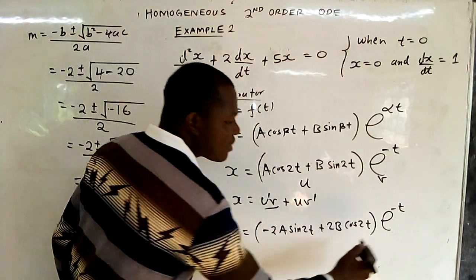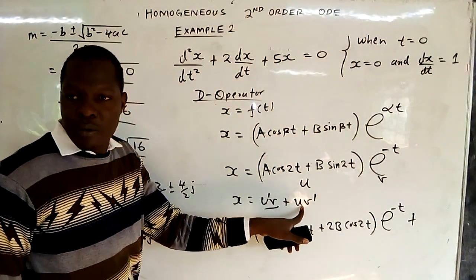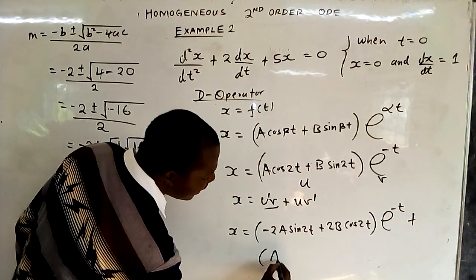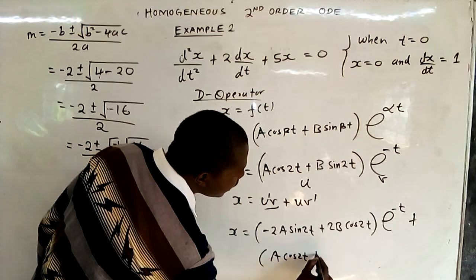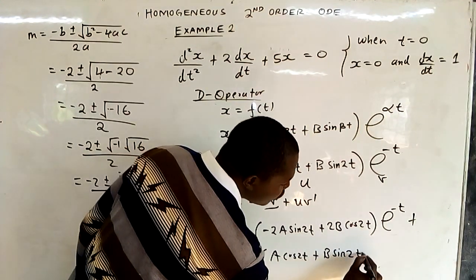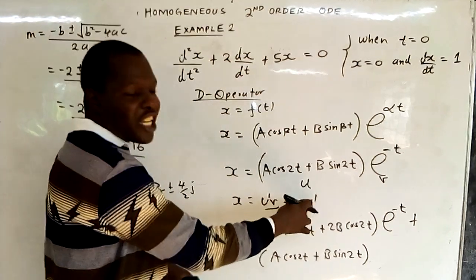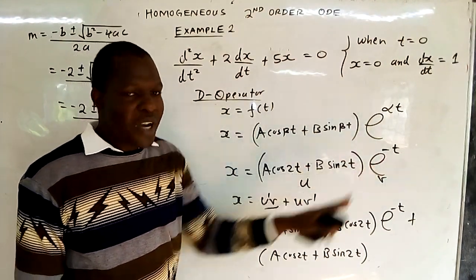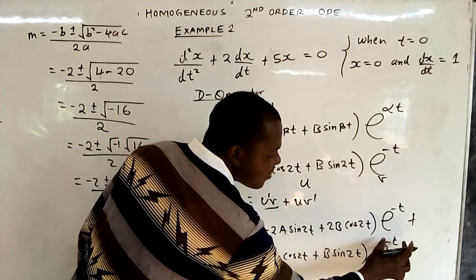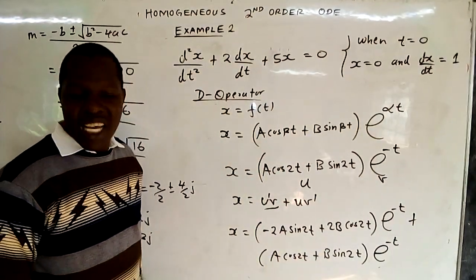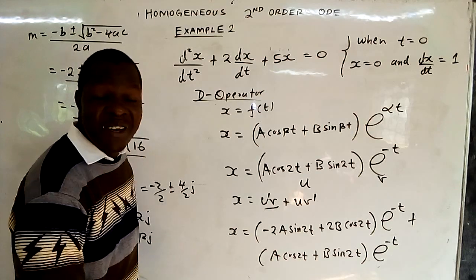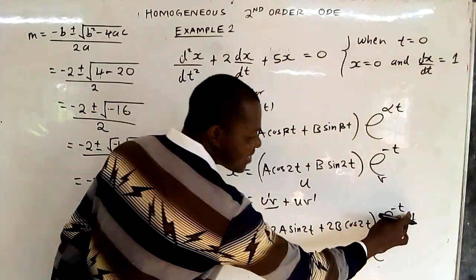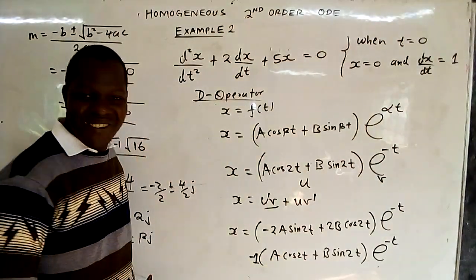Then plus u — which is A cos 2t plus B sin 2t — times v prime. Differentiating exponential negative t gives exponential negative t times negative 1 from the chain rule, so the sign changes to negative. This completes the differentiated equation.